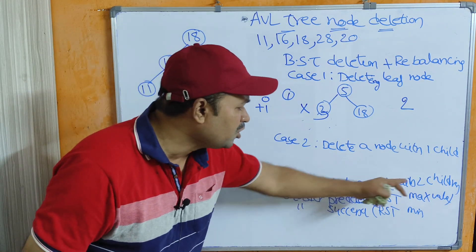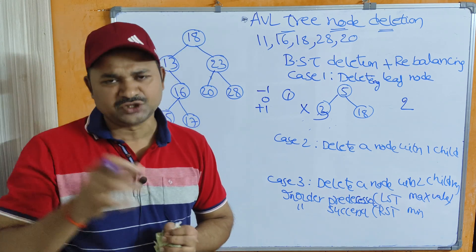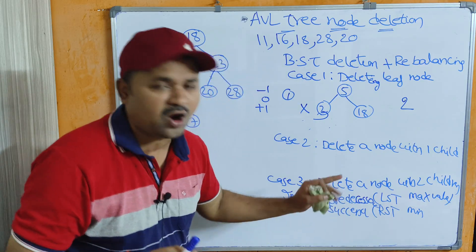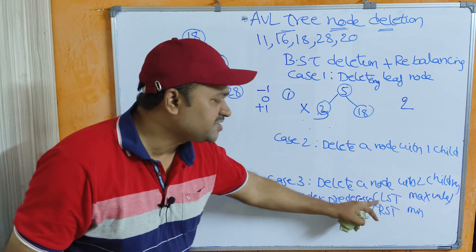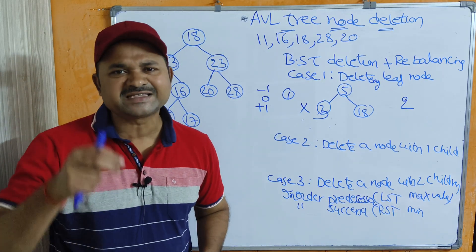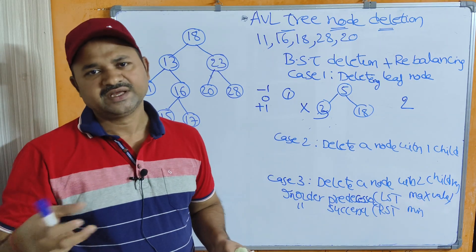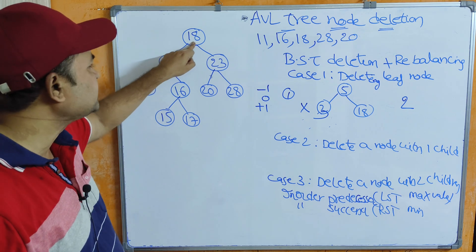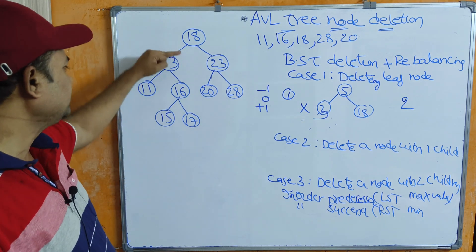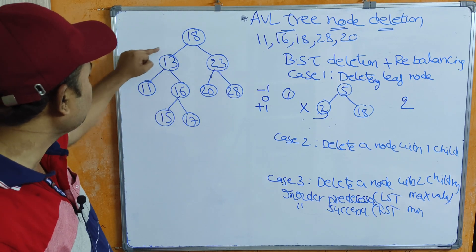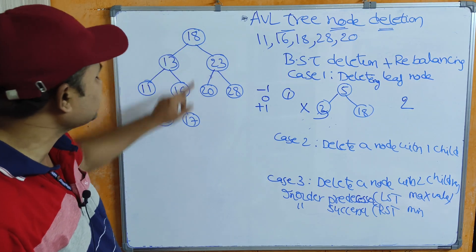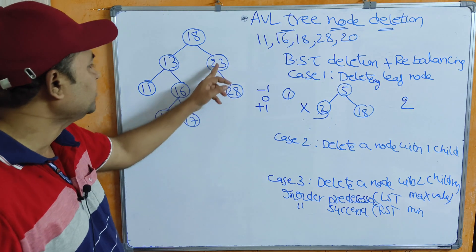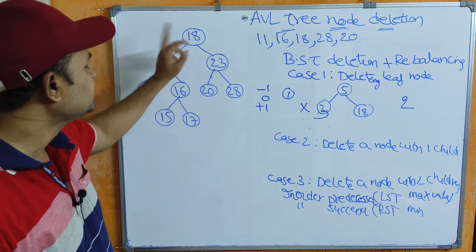Case 3 is deleting a node with 2 children. We can replace the deleted node with the inorder predecessor of that node — inorder predecessor means the left subtree's maximum value — or we can replace the deleted node with the inorder successor node, which means the right subtree's minimum value. For example, to delete node 18, we can replace it with 17 (inorder predecessor) or with 20 (inorder successor, the minimum of 23, 20, 28).